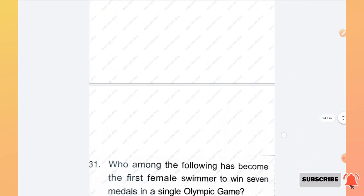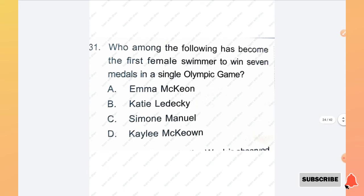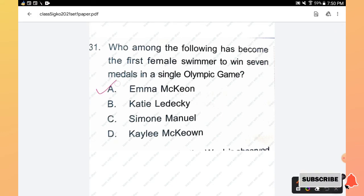Next section is Current Affairs. Question number 31: Who among the following has become the first female swimmer to win 7 medals in a single Olympic game? Options are Emma McKeon, Katie Ledecky, Simone Manuel, and Kylie McKeown. The right answer is option A, Emma McKeon.